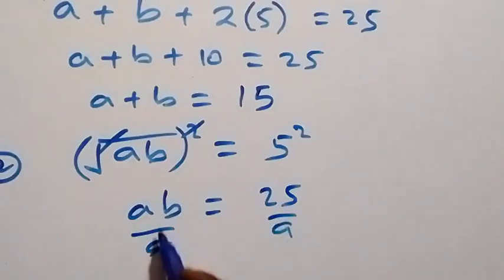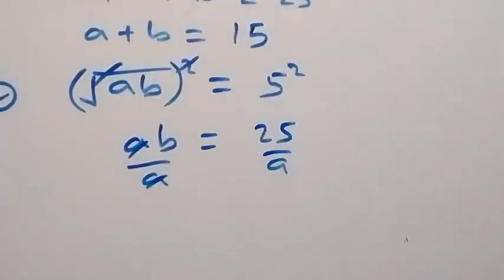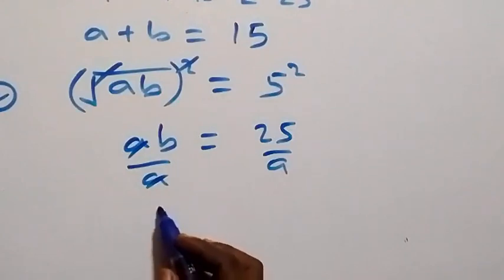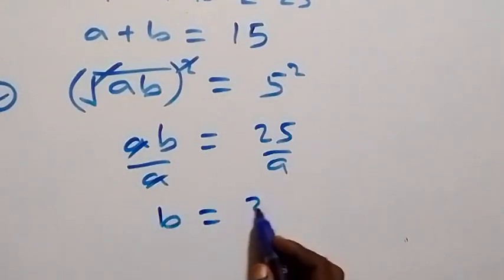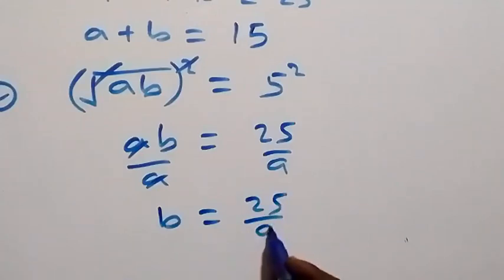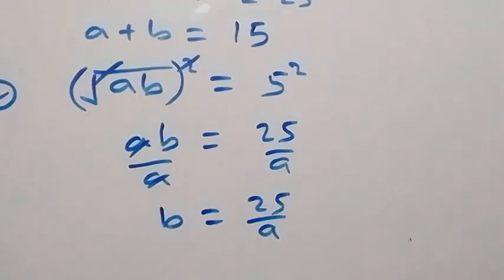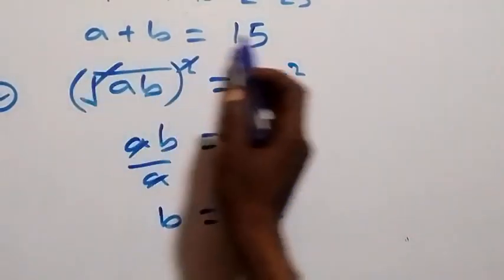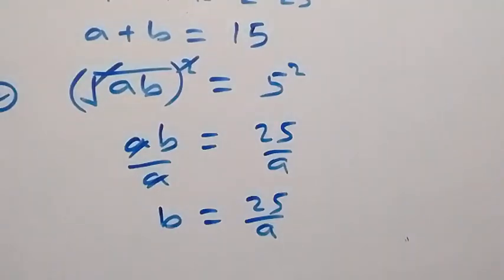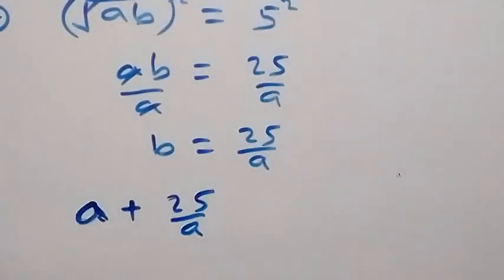Let's divide both sides by a. The a's cancel, giving us b equals twenty-five over a. Now substitute the value of b into the equation a plus b equals fifteen. The equation becomes a plus twenty-five over a equals fifteen.